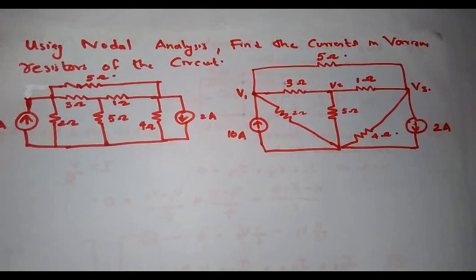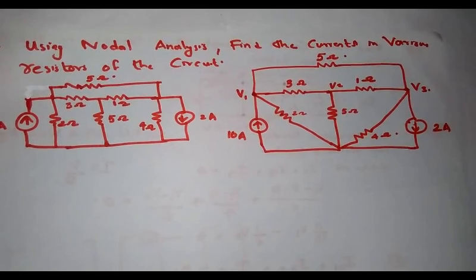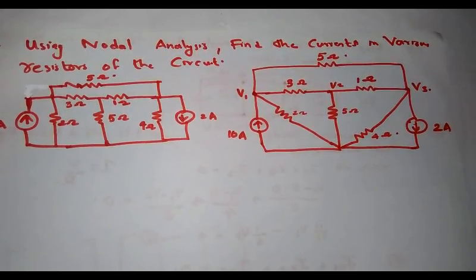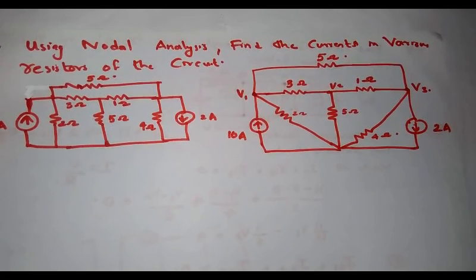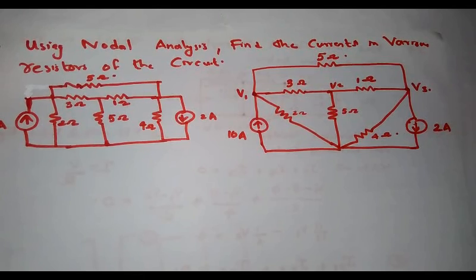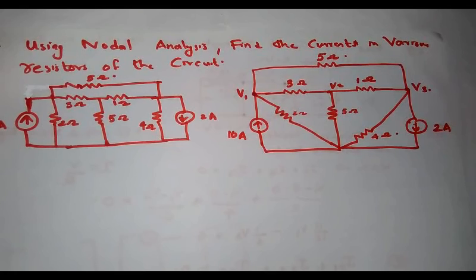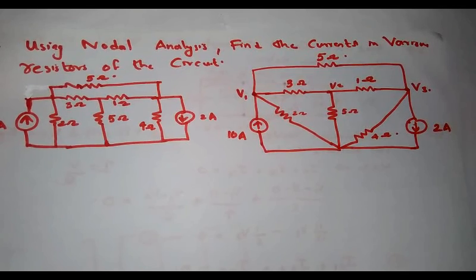This is a repeated problem commonly asked in KTV question papers. This problem consists of current sources instead of voltage sources. By seeing a current source in the circuit, we can decide this equation is solved simply by using nodal analysis. Even though it is not specified in the question, if there is a current source present in the given circuit, we have to solve the equation by using nodal analysis.